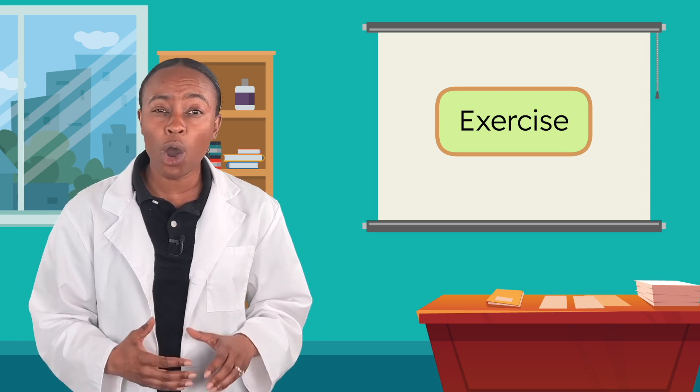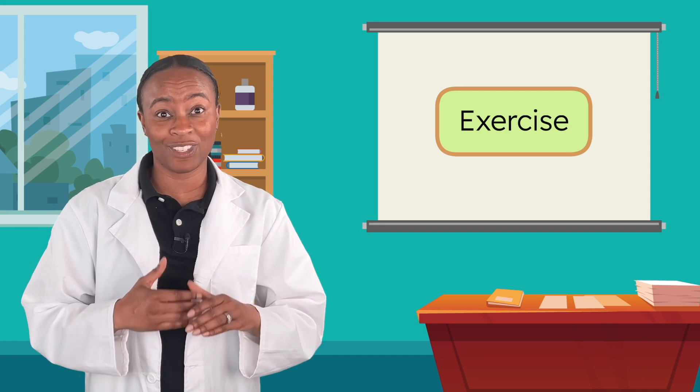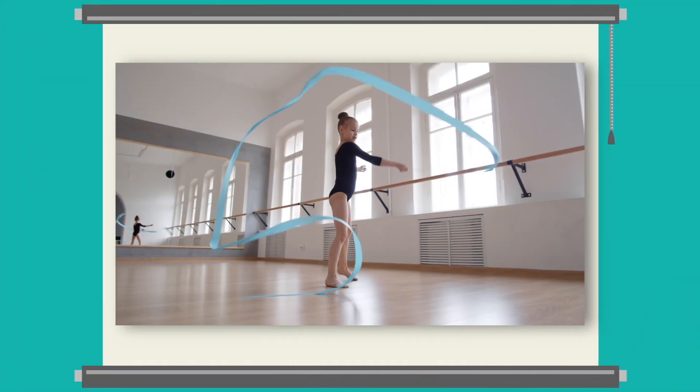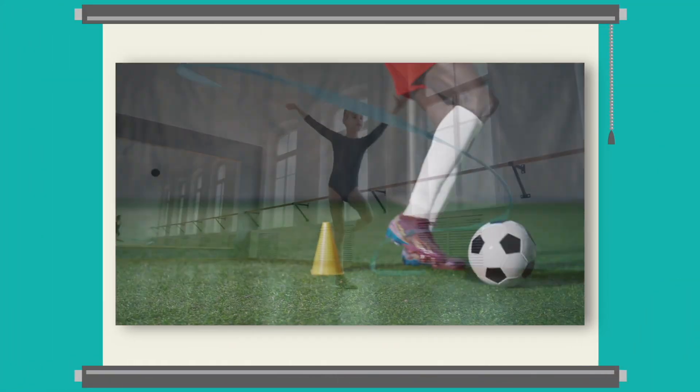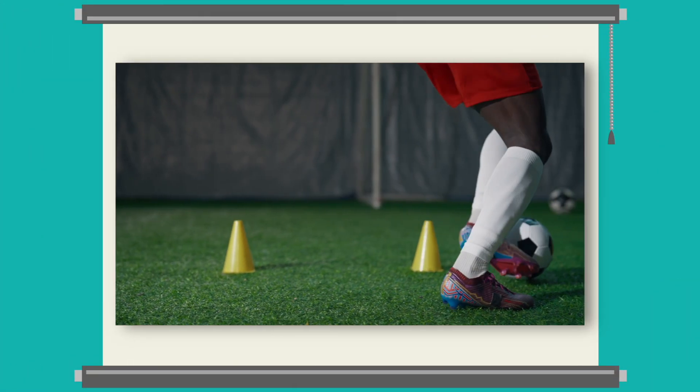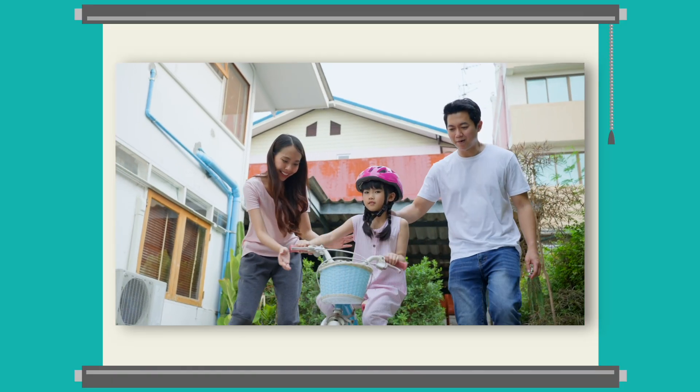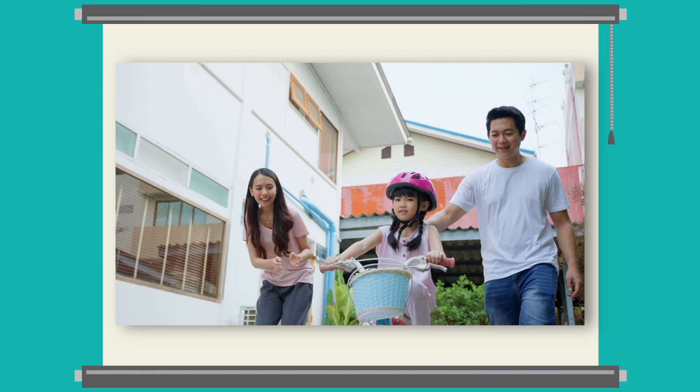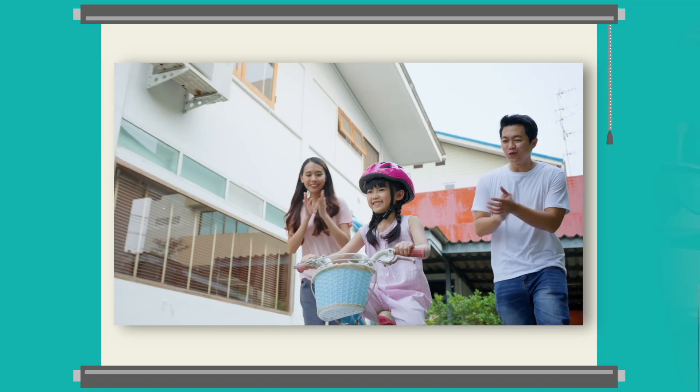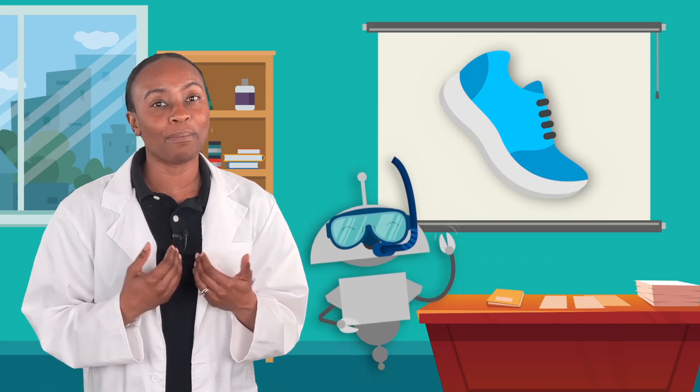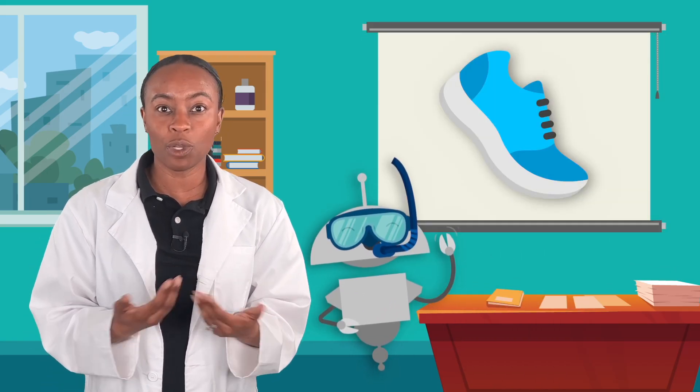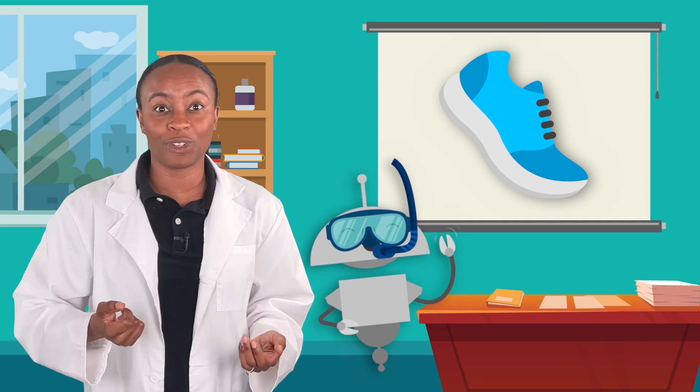There are so many ways to get exercise. We can dance, play a sport, ride a bike. What do you like to do to move your body? Oh, Mia's favorite type of exercise is swimming. Mine is running. So I'll use a running shoe for my exercise picture.